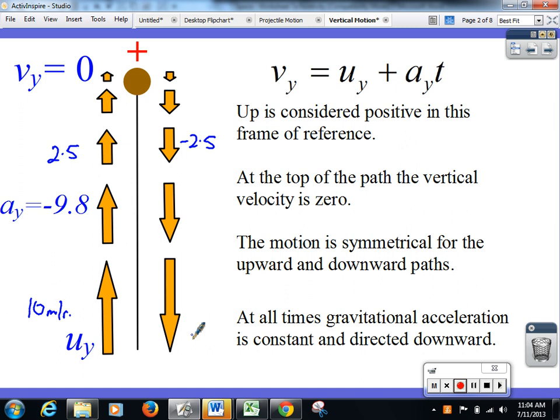At all times, gravitational acceleration is constant and it's directed downward. We do not consider that we're throwing it up so far that it changes from being 9.8. On the surface of the Earth, 9.8 is a great approximation to g. It will start to change only basically about 100 kilometres above the surface, and it becomes 8.7. So unless we're throwing it so high that it goes out of our atmosphere, it's going to stay as 9.8.